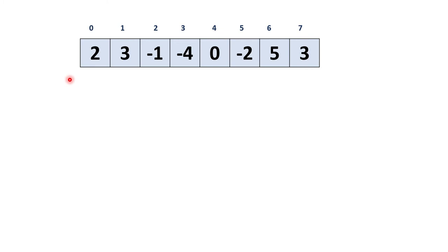Whenever we encounter negative numbers and zeros we have to handle those scenarios. The first approach is a brute force approach where we extract all subarrays, multiply the elements, compare all products, and get the result — but that takes O(n²) time. We need to check if we can solve this in linear time by traversing the array once and getting the result.